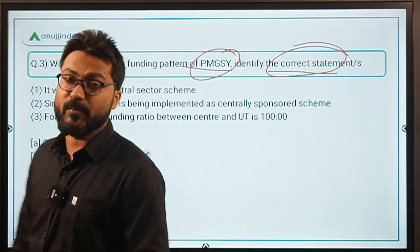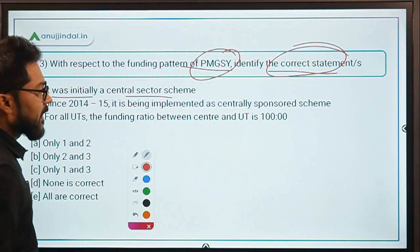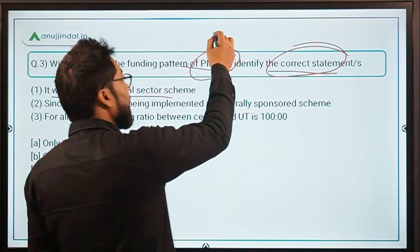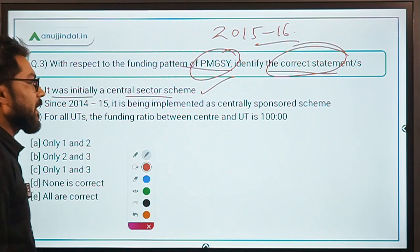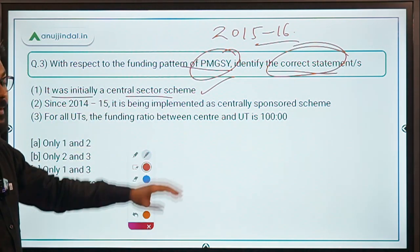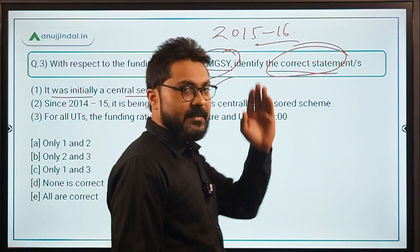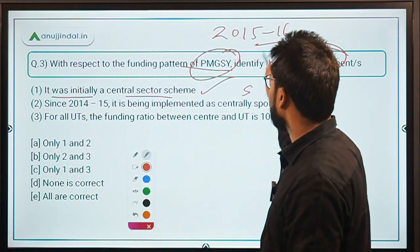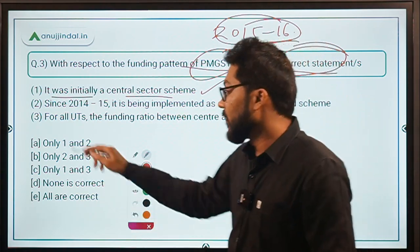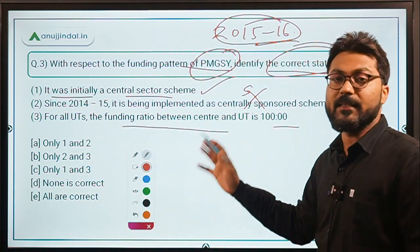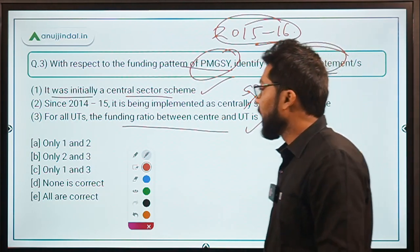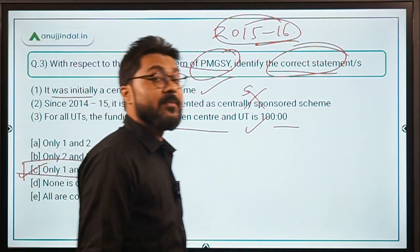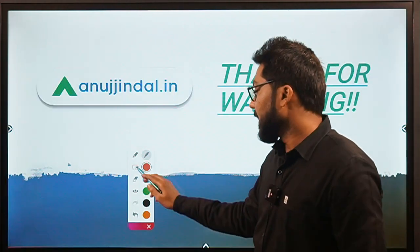Question 3: Identify the correct statement with respect to the funding pattern of PMGSY. Statement 1: It was initially a Central Sector Scheme — correct, it was a Central Sector Scheme until 2015-16. Statement 2: Since 2014-15 it is being implemented as a Centrally Sponsored Scheme — incorrect, it is since 2015-16. Statement 3: For all UTs the funding ratio is 100:0 — correct. Therefore, the correct answer is option C — only statements 1 and 3 are correct.